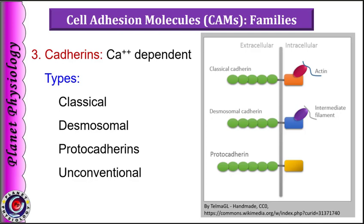Due to their interactions with cytoskeletal components, Ig superfamily molecules also play an important role in cytoskeletal assembly. The next family is cadherins, which includes more than 100 proteins classified into classical cadherins, desmosomal cadherins, protocadherins and unconventional cadherins.